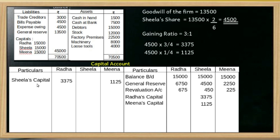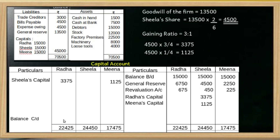Then what is the final balance? After passing all entries, the capital balances are finalized. The balance carried down for Radha is 25,250 and closing balance of capital is 25,500. Meena's capital closing balance is 16,350. Sheela's closing balance is 24,450.